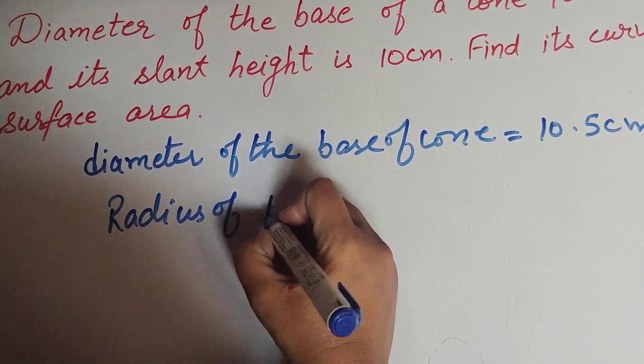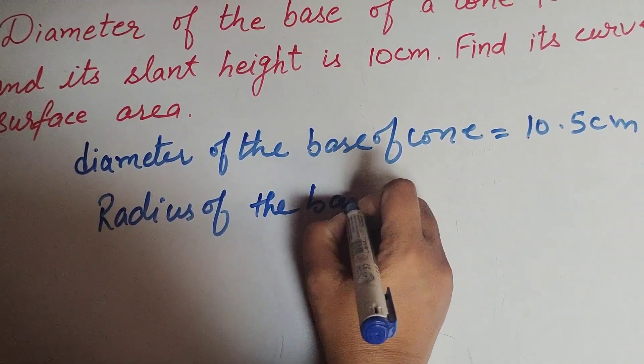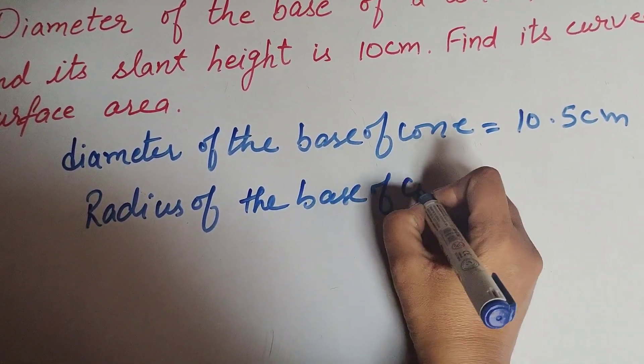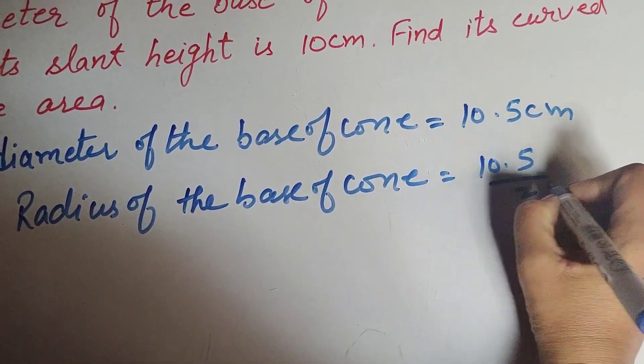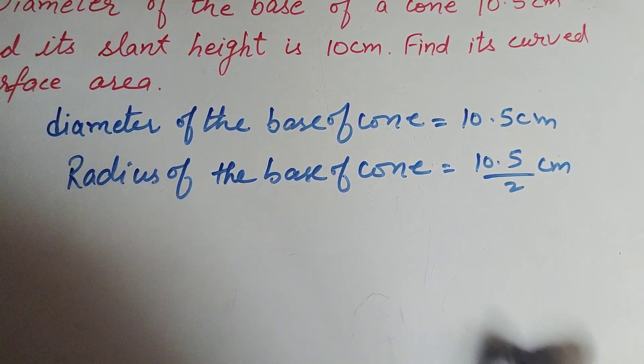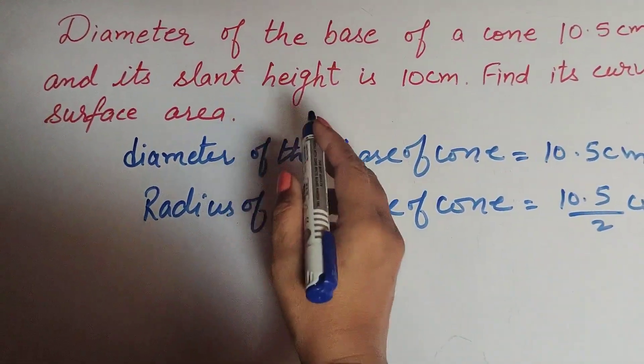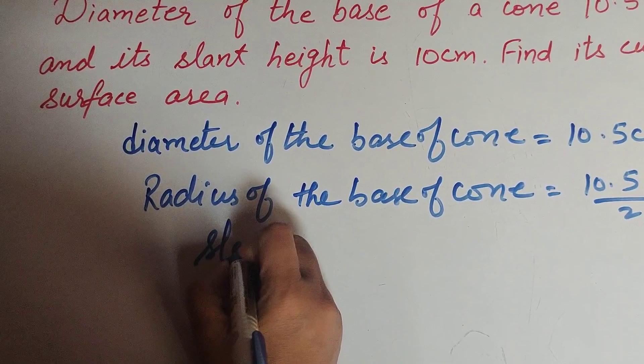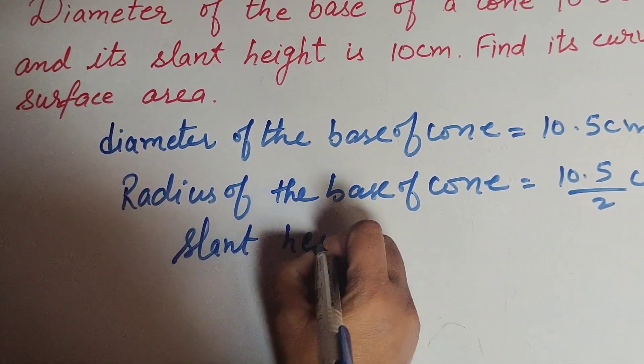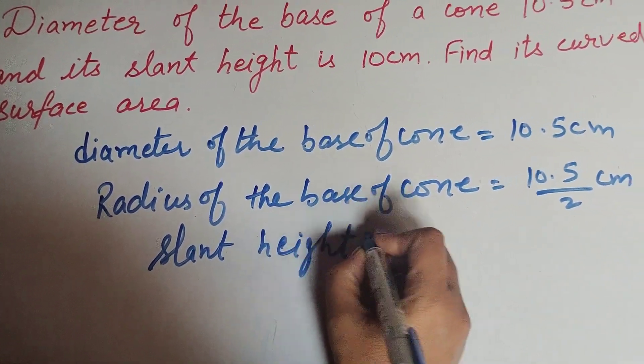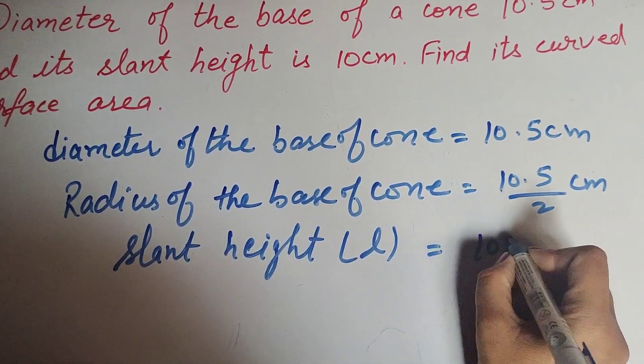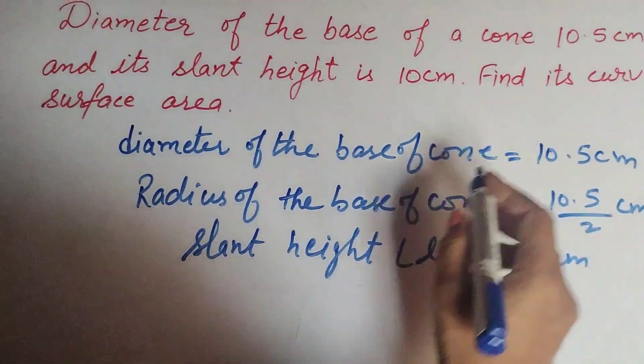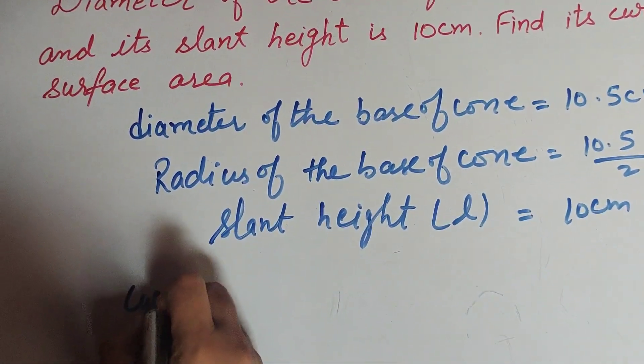Radius of the base of the cone equals 10.5 divided by 2 centimeters. The slant height of the cone is given. Slant height, denoted as l, equals 10 centimeters.